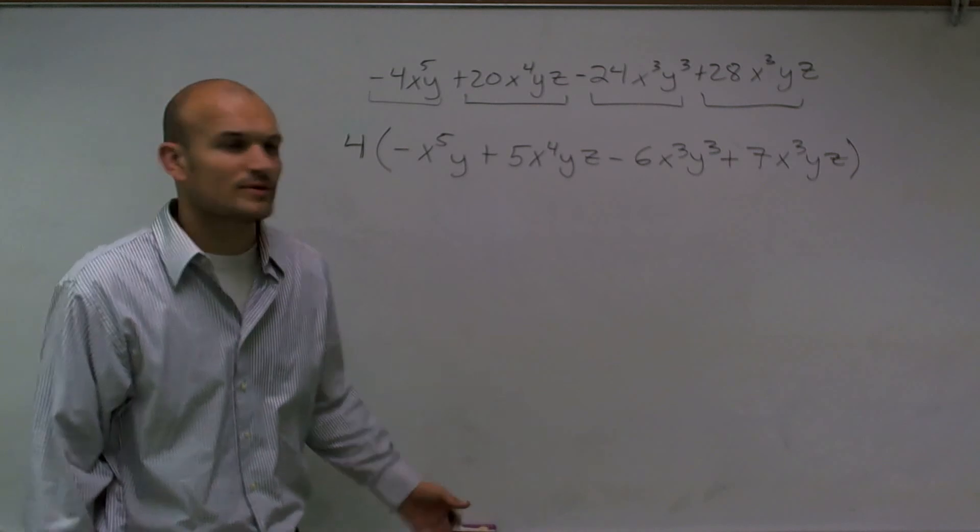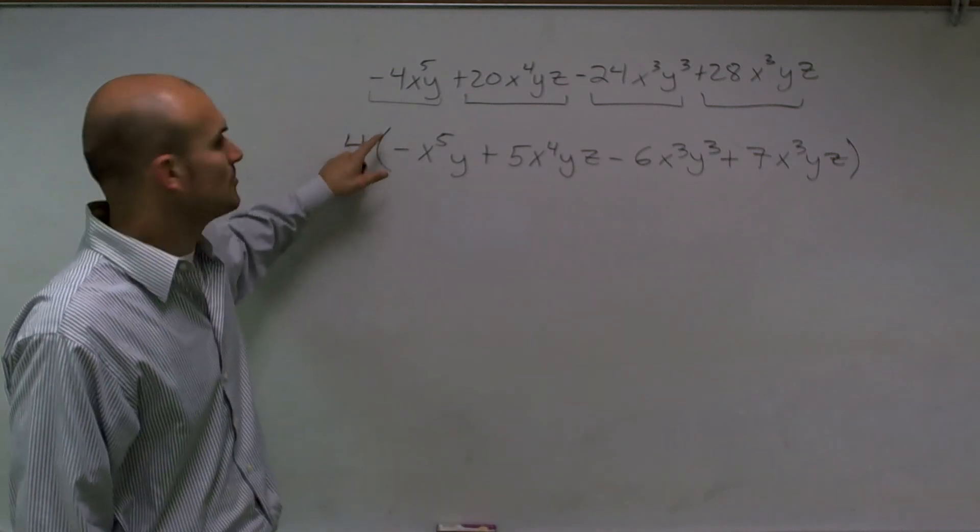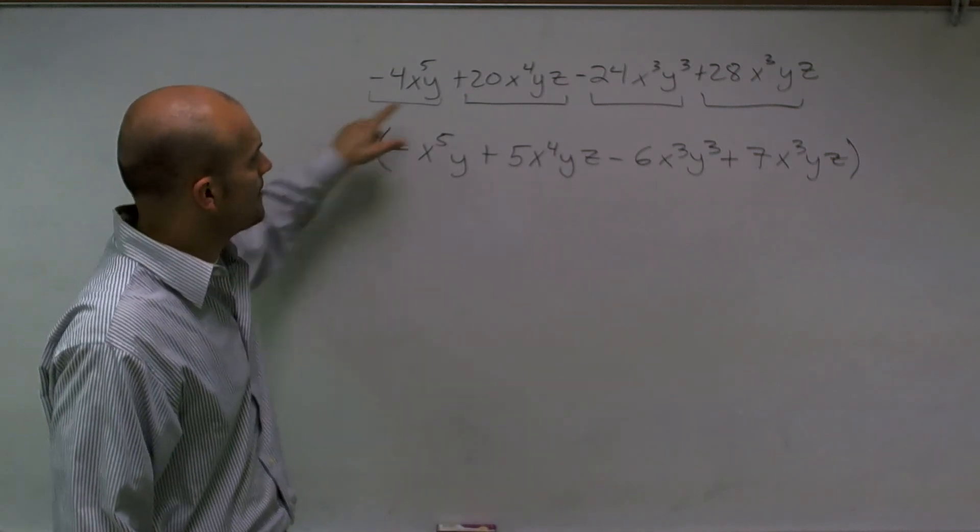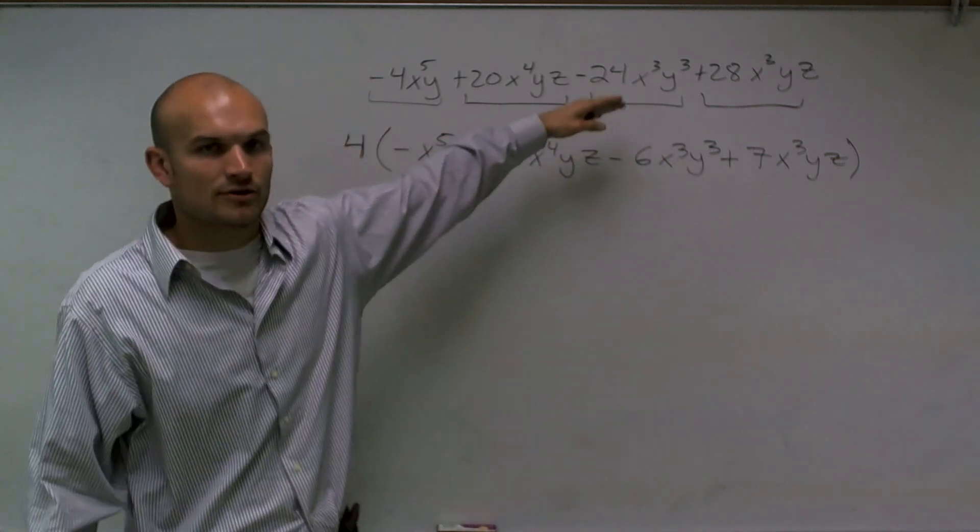And you can always check your work with this by just simply doing the distributive property and multiplying your four back to every single monomial and you'll get back your original answer.